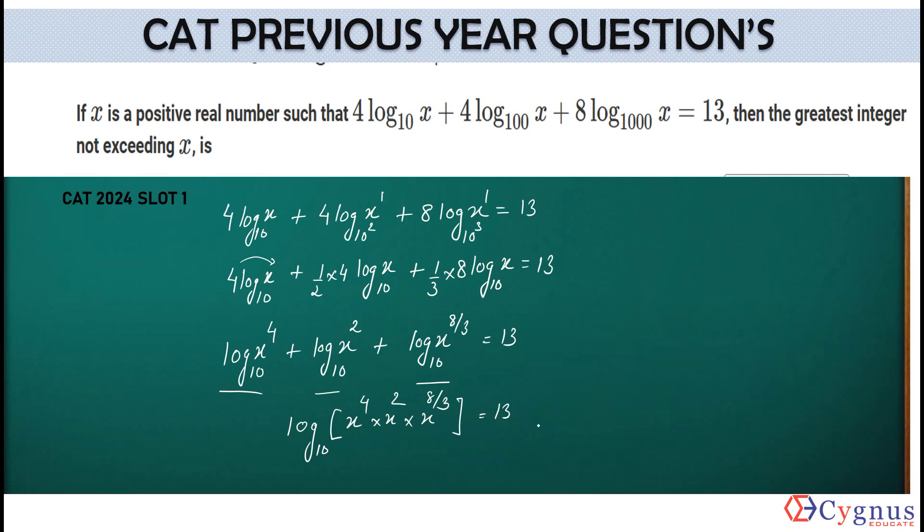Here sum. Now, what do you get here? x to the power 4 plus 2 plus 8 by 3. When you take the LCM, you get 3 here. This is 12 plus 6, that is 18. 18 plus 8 gives you 26. So, actually this is log of x to the power 26 by 3. And what's the base here? The base is 10. And this is given equal to 13.